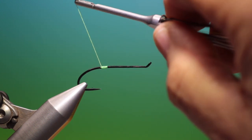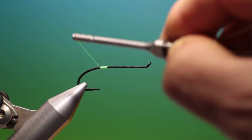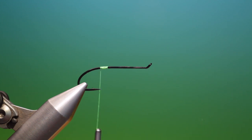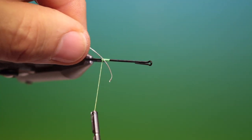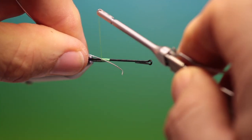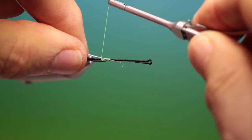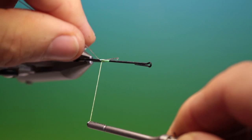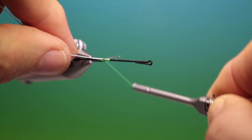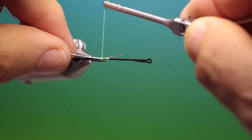There are many recipes for this but this is the one I use. Let's turn the vise to one side. I've got some medium flat, medium oval silver tinsel which we'll just tuck in there and then we'll go forward.